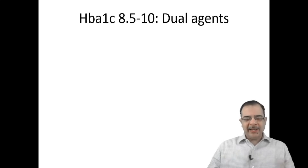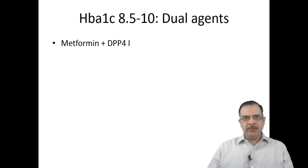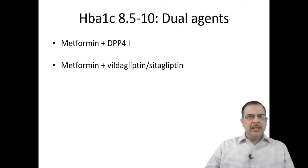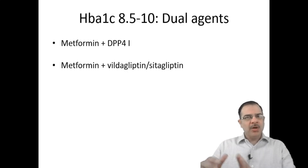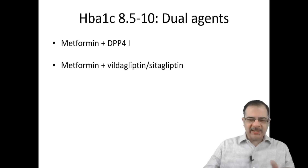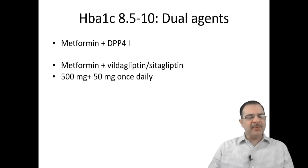If HbA1c is 8.5 to 10 when the patient first presents, or HbA1c is not controlled with a single agent, start double agent therapy. The combination will be metformin plus a DPP-4 inhibitor such as Vildagliptin, Sitagliptin, or Linagliptin. If the patient was already on metformin 1000 mg twice a day, just add Vildagliptin or Sitagliptin. If starting fresh, follow the same metformin protocol: 500 mg once a day plus 50 mg once a day of Vildagliptin or Sitagliptin. Call the patient after four weeks.